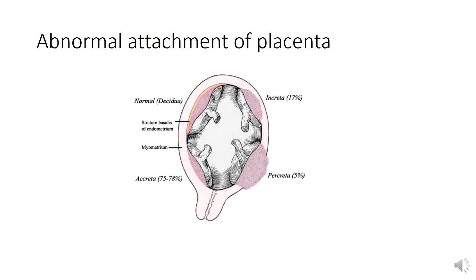Normally the placenta is easily detached from the uterine wall during the third stage of labor. However, sometimes the chorionic villi invade the full thickness of the endometrium and become adherent to the myometrium — this condition is called placenta accreta. Very rarely, the chorionic villi penetrate the full thickness of the myometrium and reach the perimetrium; this is called placenta percreta. Both placenta accreta and percreta are excessively adherent to the uterine wall and lead to the clinical condition of retained placenta.